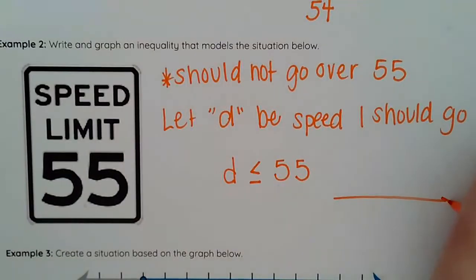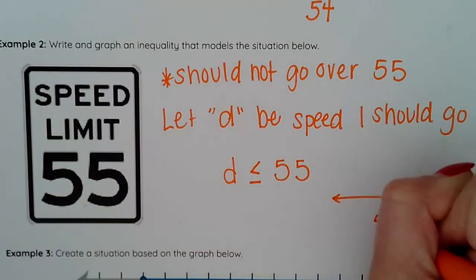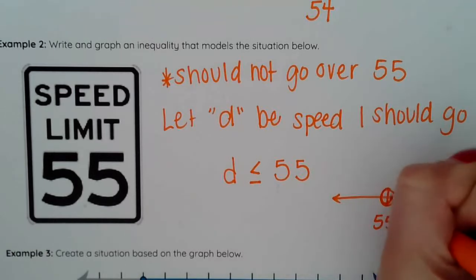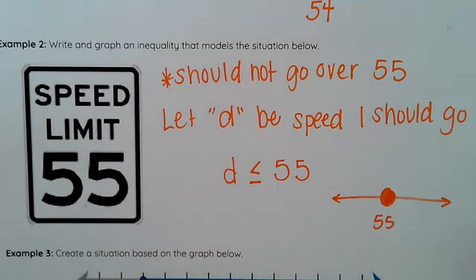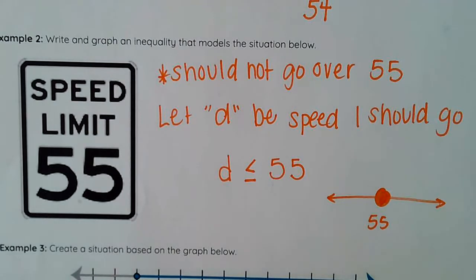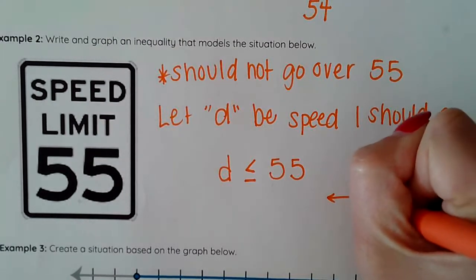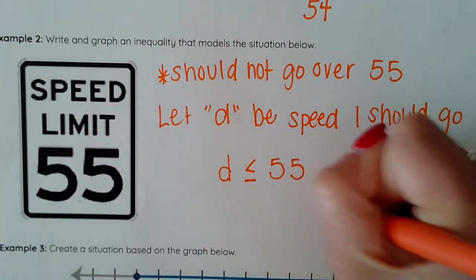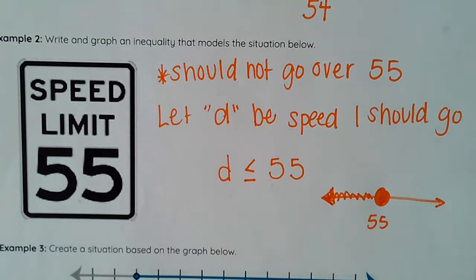So again I graph. This time I color in my circle because I can go 55 but as soon as I hit that 56 I could technically get a ticket. Then I shade to the left because it should be under 55.